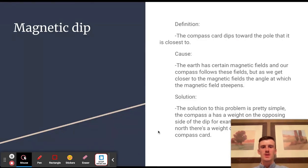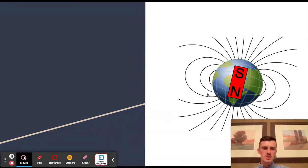Magnetic dip: the compass card dips toward the pole that it's closest to. You can see that in this picture here. These are flipped, of course, so you can see this one coming across right into here. Our compass will actually follow these courses.